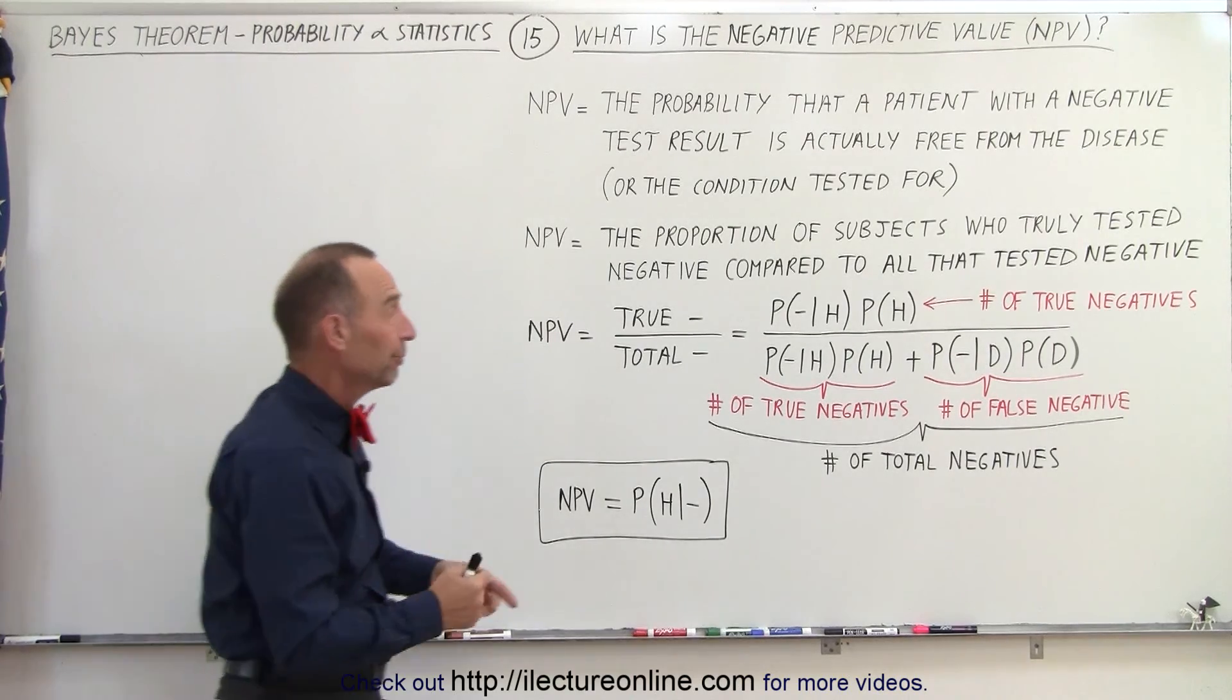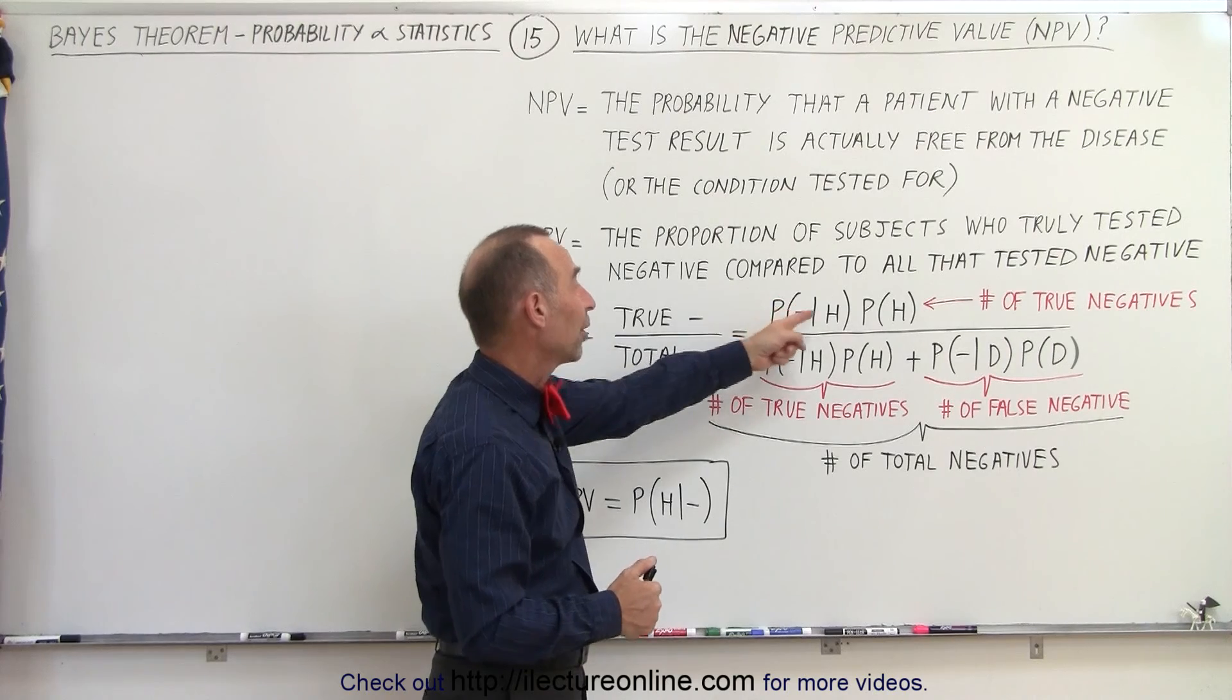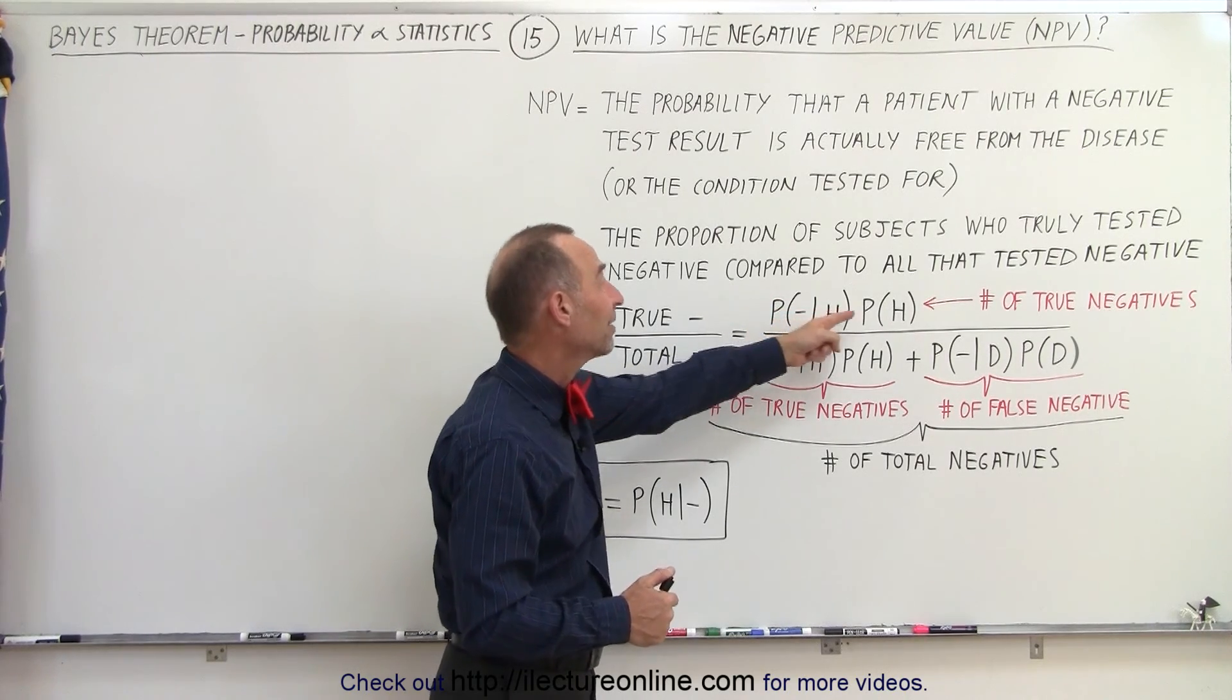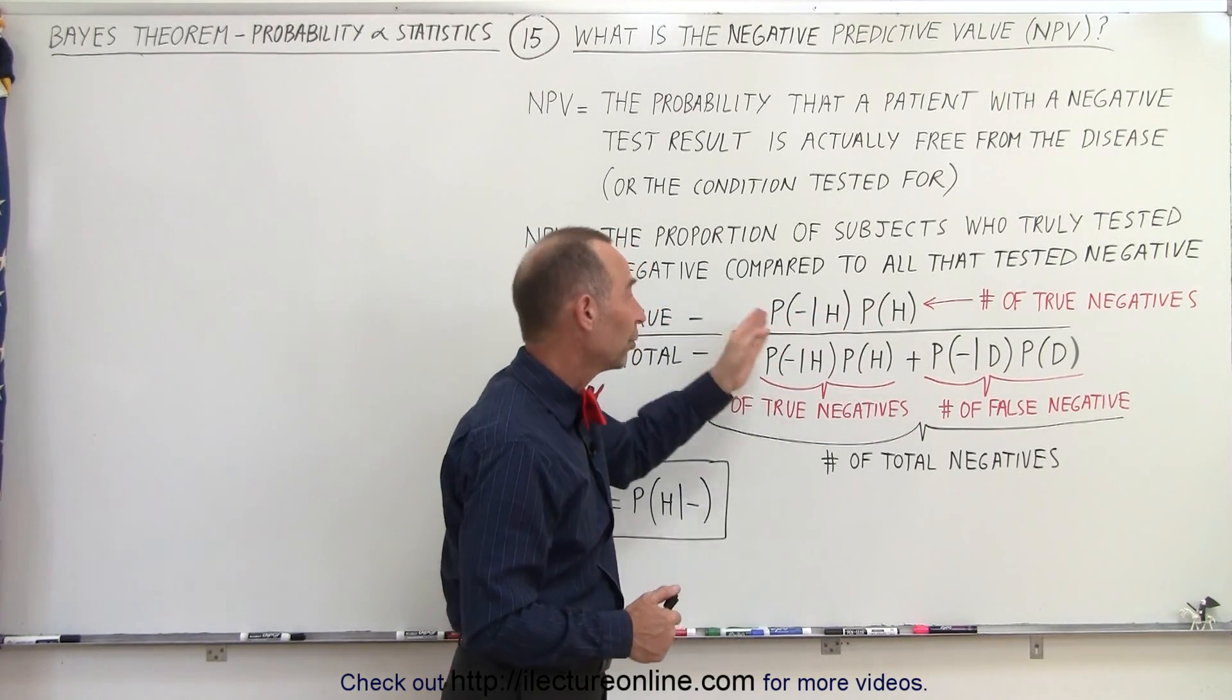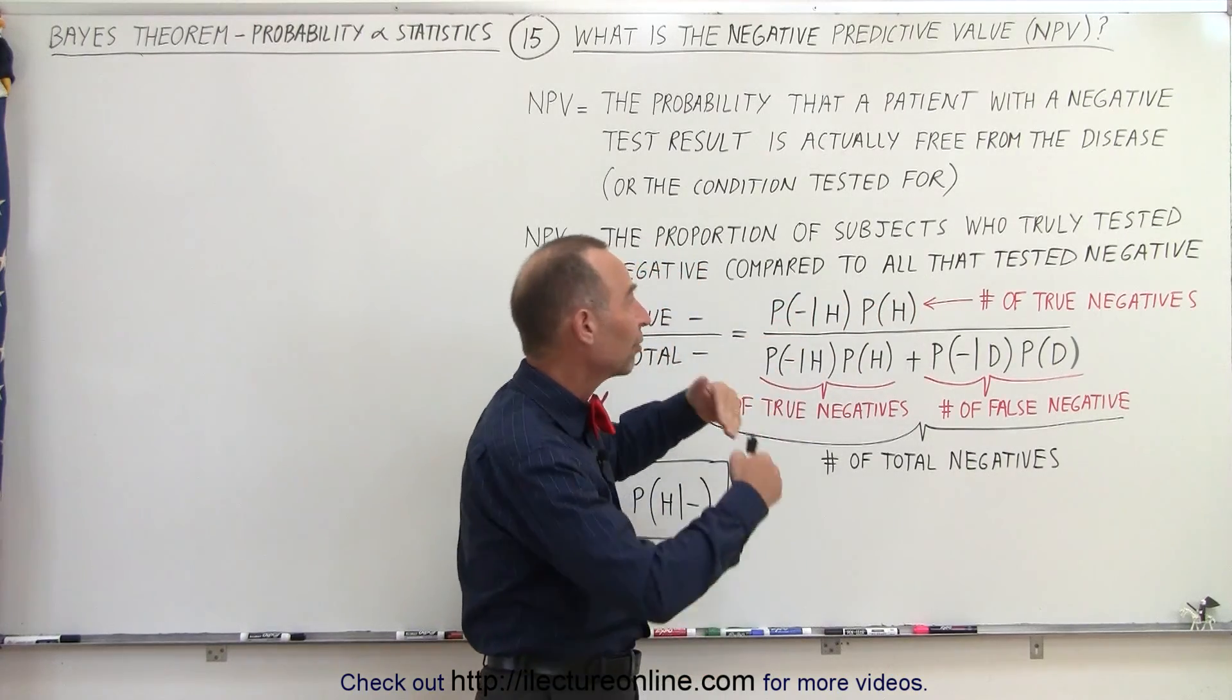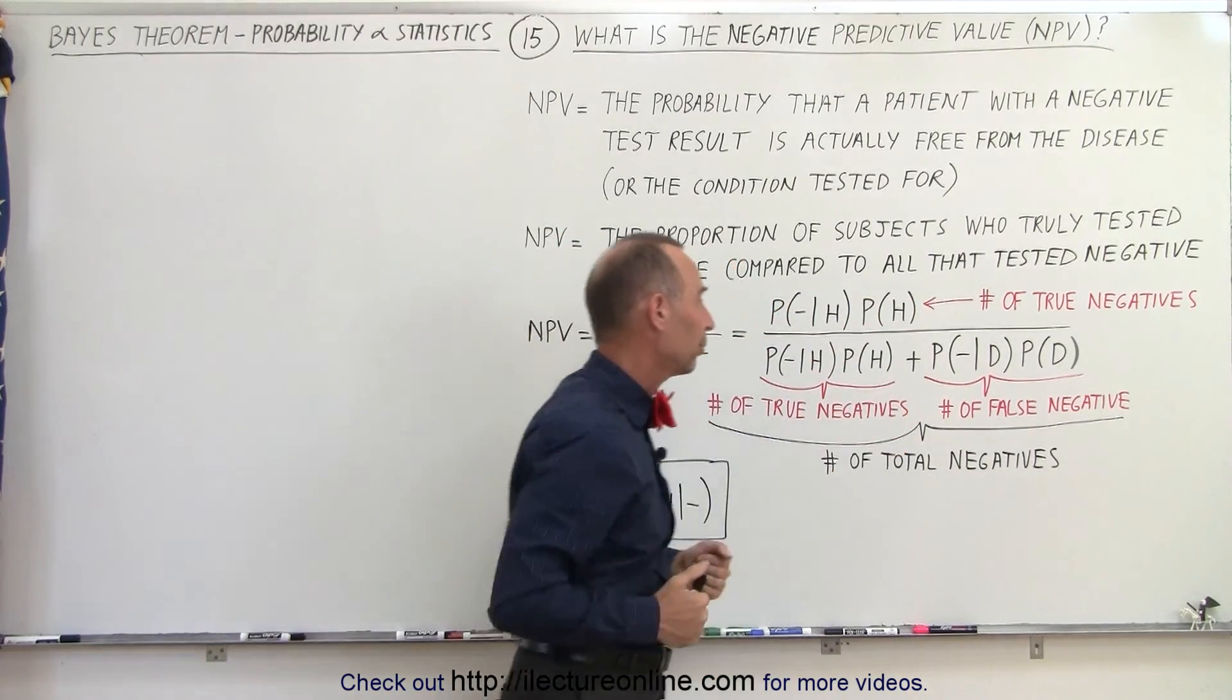In an equation format, we can say that there's a probability that if you are healthy, you test negative times the probability that you're healthy, which means the numerator here represents all the true negative test results.